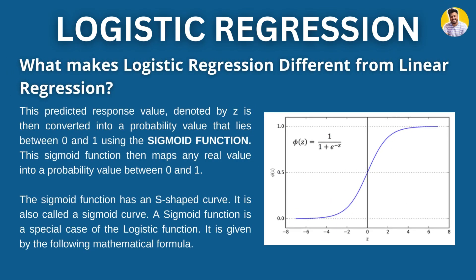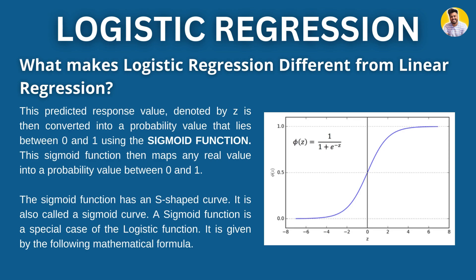What makes logistic regression different from linear regression is the activation function. The predicted response value from the mathematical equation is passed to the activation function, which is called the sigmoid function. That is the equation of the sigmoid function. When it predicts the probability of a value, that probability value is passed to the sigmoid function, which decides whether it will be mapped to one or zero.